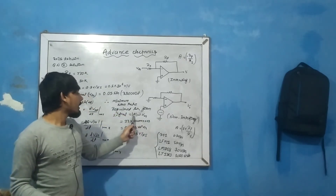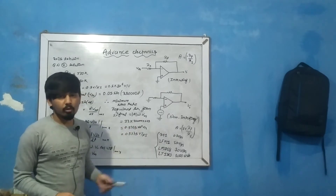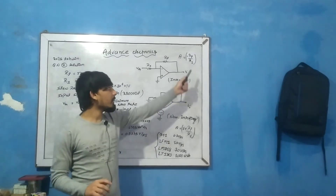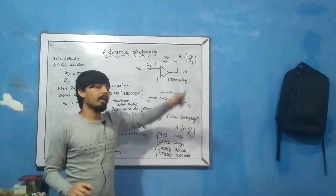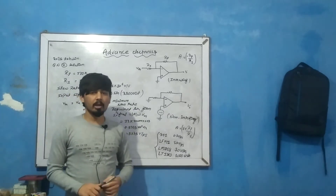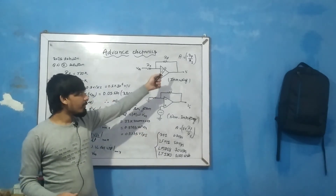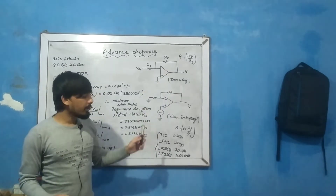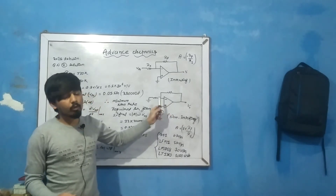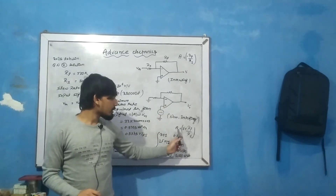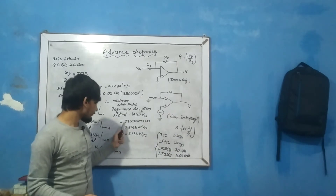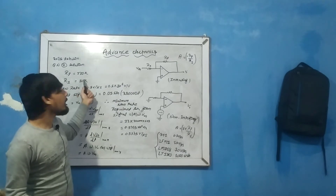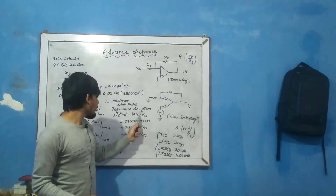So minimum slew rate required = A × ω × vm. For the inverting amplifier, the gain magnitude is |A| = RF/R1. For a non-inverting op-amp, the gain would be 1 + RF/R1. Here we use the magnitude of the inverting gain, which is RF/R1.